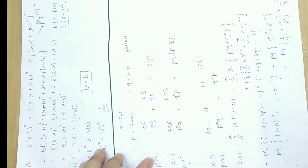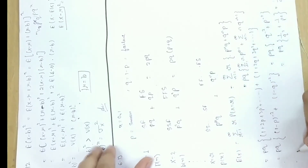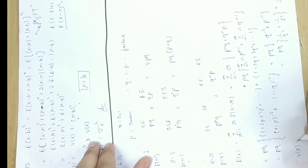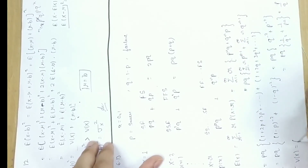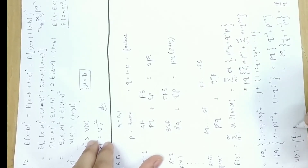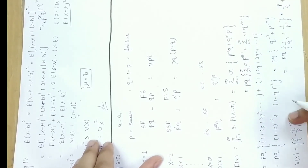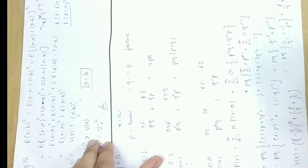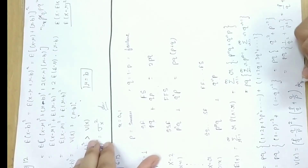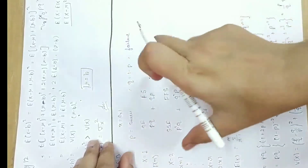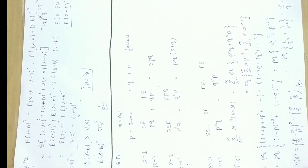So the expectation of x is p upon q plus q upon p. Now for the variance of x: the procedure is very lengthy and you may not get much time in the exam. The variance equals p upon q minus q upon p whole squared, plus p upon q plus q upon p. So learn this result directly. This completes the expectation and variance for this Bernoulli trial example.